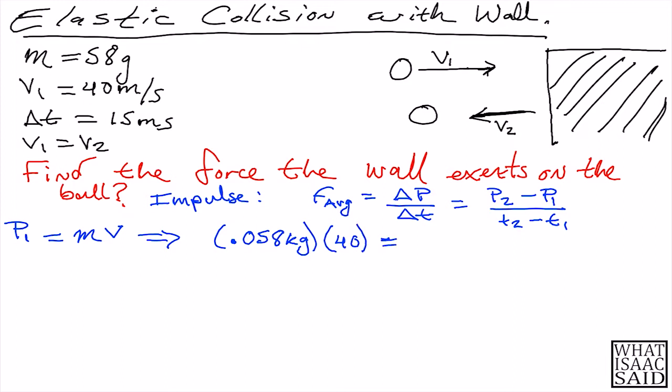Times the velocity, the velocity was 40 meters per second. Once we calculate that, that should give us 2.32 kilograms meters per second. That is our momentum before this ball hits the wall, the momentum prior to the collision.